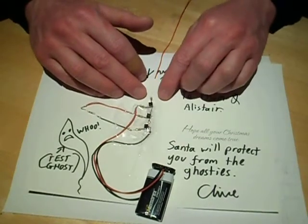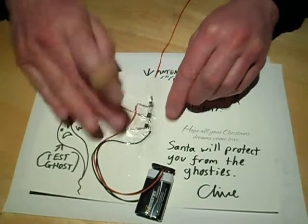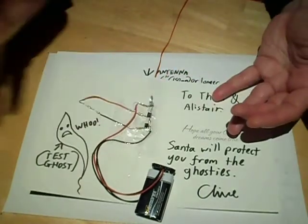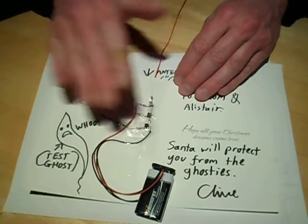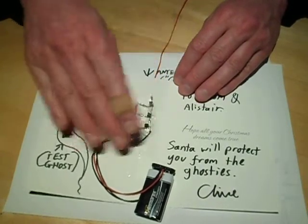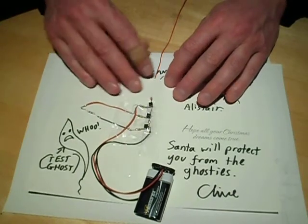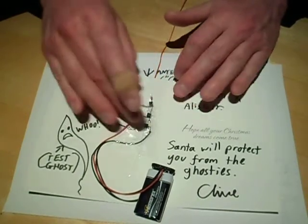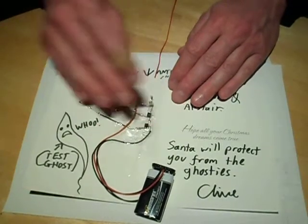Now I did notice when putting it into the card that you have to put a layer of sellotape down first to insulate it from the card because the card absorbs moisture and effectively really this circuit is so sensitive that the fact that the cardboard is slightly, very slightly conductive means that it can sort of limit the sensitivity of the antenna of the circuit in general.